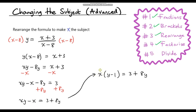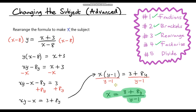Finally we want to get x on its own, so we need to divide by y minus 1. We divide both sides by y minus 1. On the left hand side we're just left with x because those terms cancel. On the right hand side we copy everything out — so our final answer is x equals 3 plus 8y all over y minus 1. I've made x the subject. Let me just tick off that last step to show we've done all five.